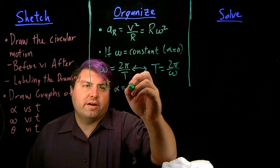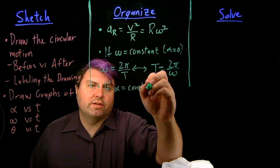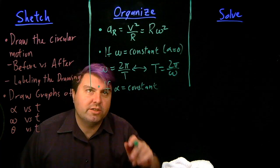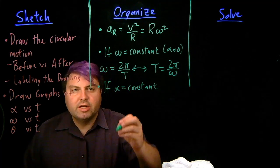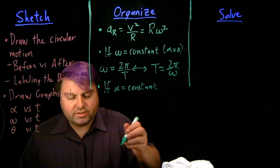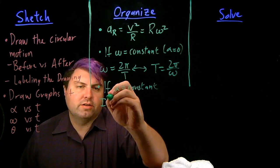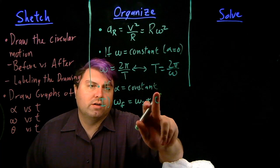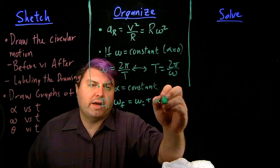If instead our alpha is constant, then we can't use this because our period would then be changing because our omega would be changing. But we get two different separate equations, very similar to what we saw for linear kinematics.